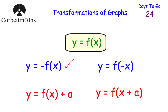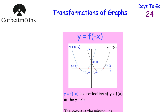Now y equals f of minus x — we've got a minus inside the brackets. This one is a reflection in the y-axis. Using the same quadratic graph in black, if we sketch y equals f of minus x, that's the blue graph — we're reflecting in the y-axis. Points on the right-hand side of the y-axis get reflected to the left-hand side: 1, 0 goes to minus 1, 0; and 3, 0 goes to minus 3, 0. Points on the y-axis stay where they are — so 0, 3 stays at 0, 3. Essentially, we just flip the graph horizontally.